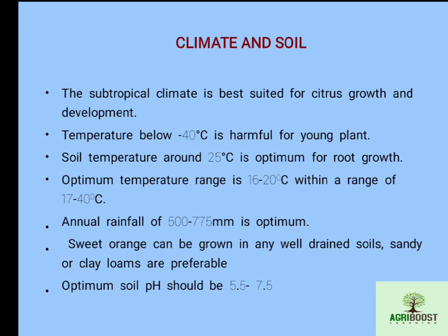Citrus requires a subtropical climate. Temperature below minus 4 degrees Celsius is harmful for young plants. Soil temperature around 25 degrees Celsius is optimum for root growth. The optimum temperature range for citrus cultivation is 17 to 40 degrees Celsius. Annual rainfall required is 500 to 775 mm.